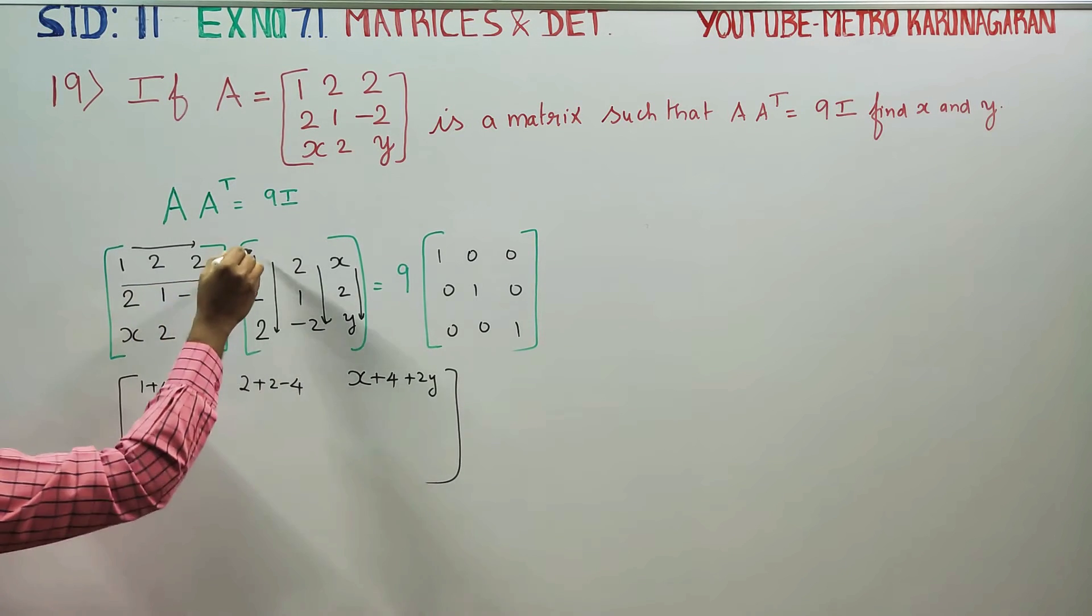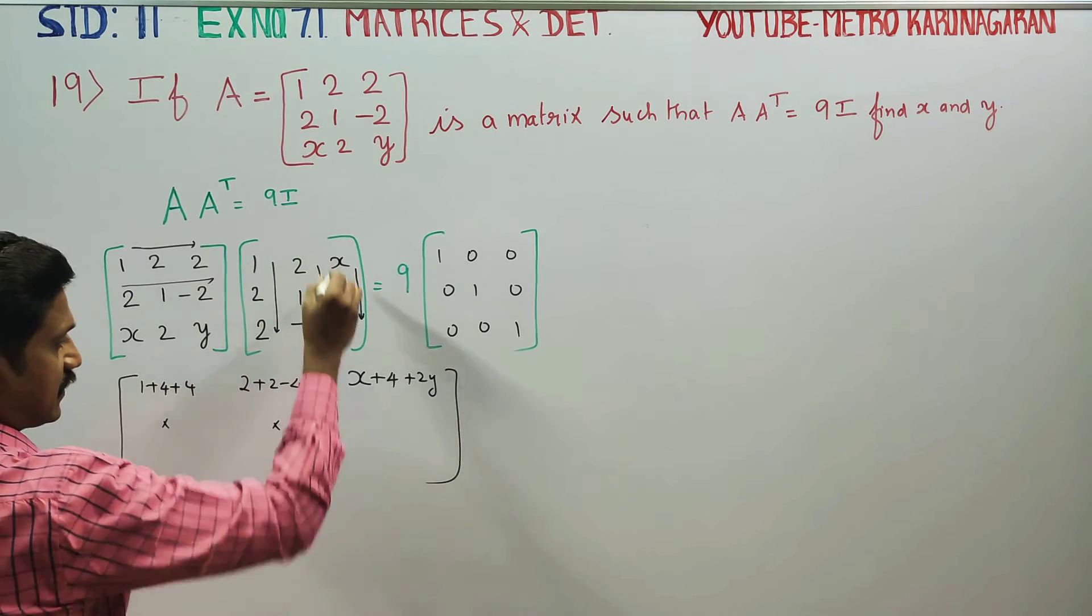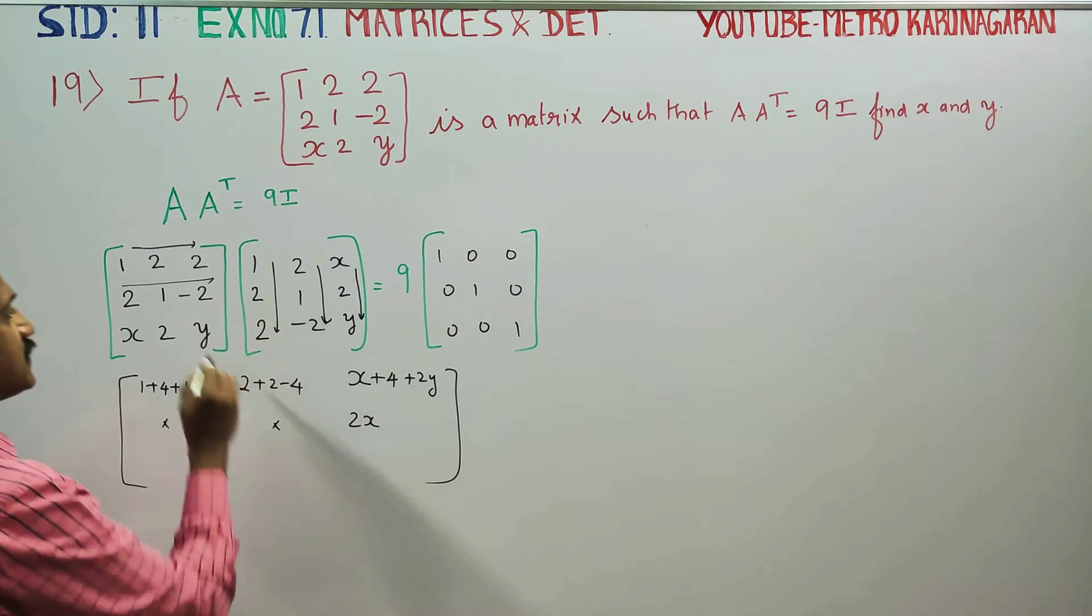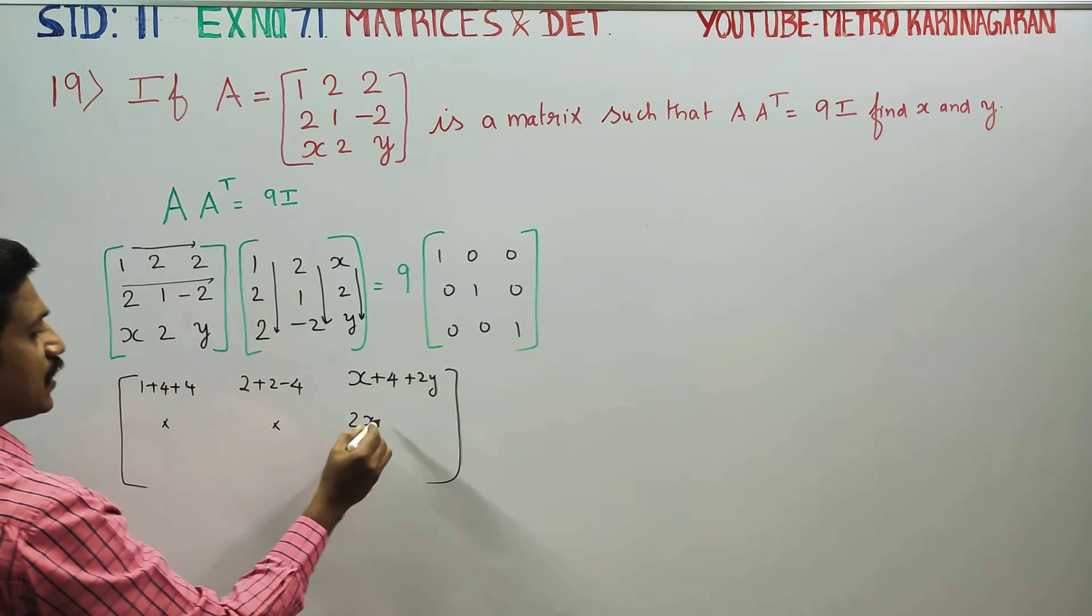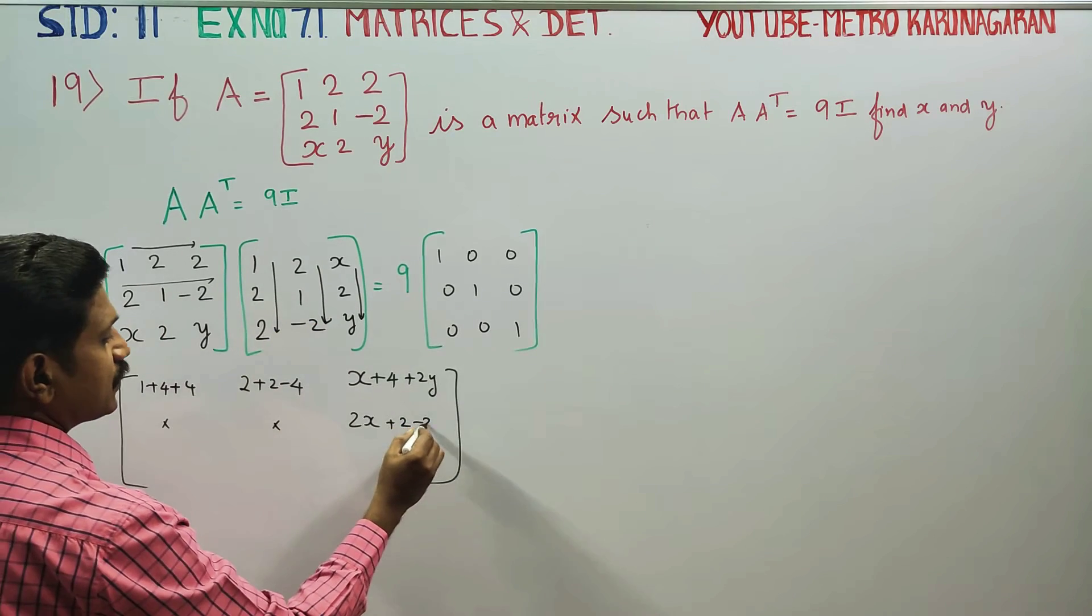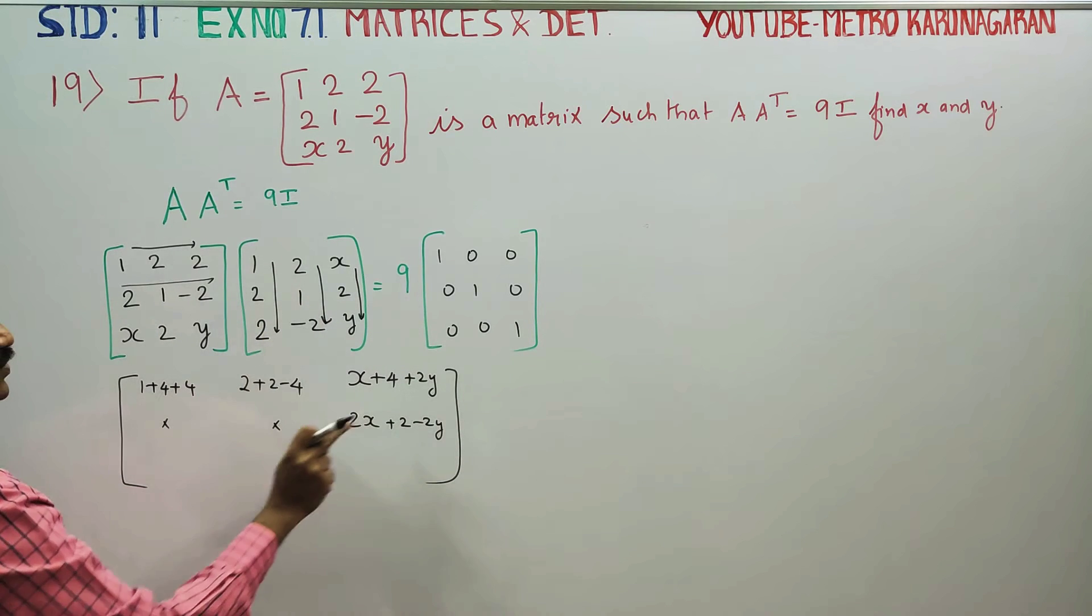Second row into column, this is 2x. 2x is 2x. 1 into 2 is 2. Minus 2 into y is 2y, row into column. 2x plus 2 minus 2y.